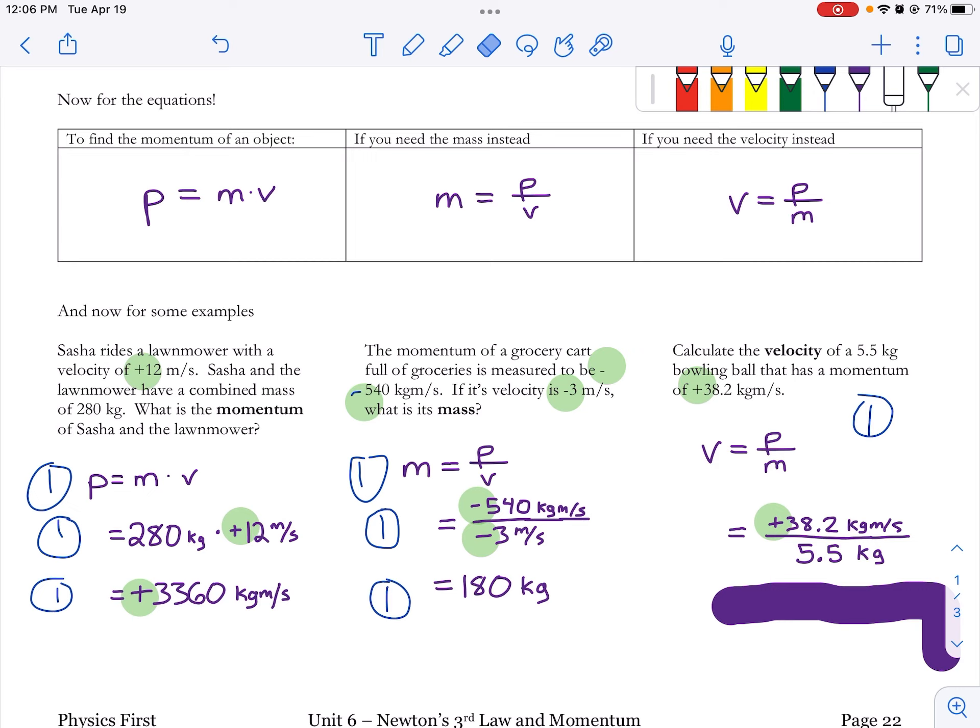So in my calculator, I'm just going to type in 38.2 divided by 5.5. And then that's not going to be a pretty number. It's probably going to have a bunch of numbers after a decimal. So I'm going to round and I'm going to write my answer down. And I'm going to keep that positive there because that positive is the direction.